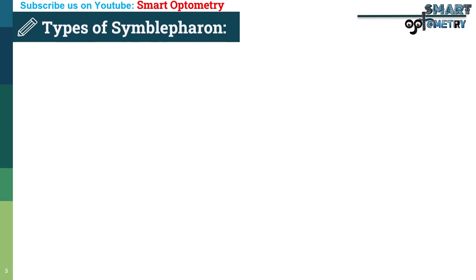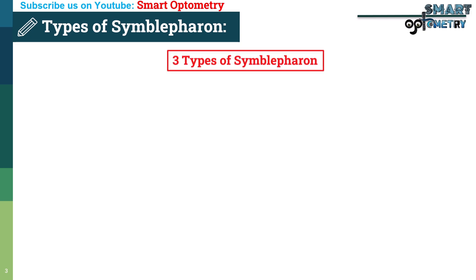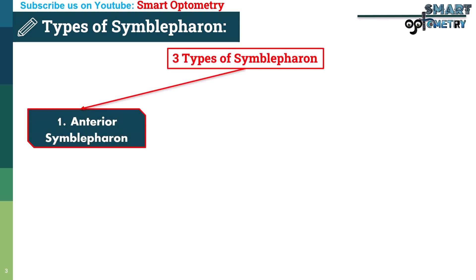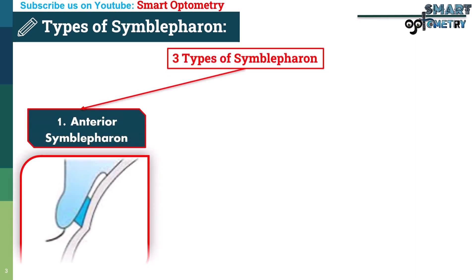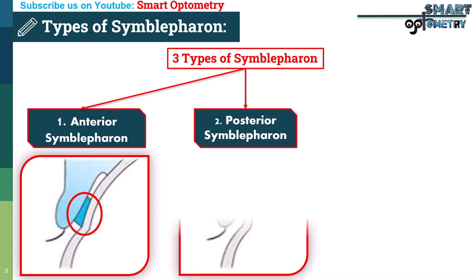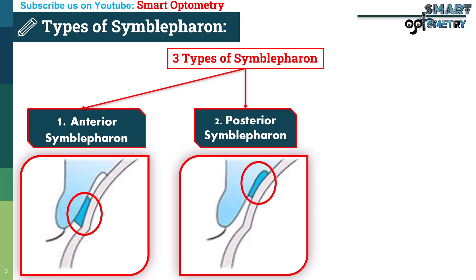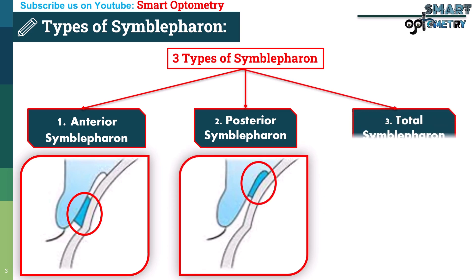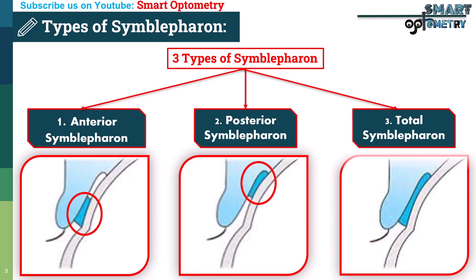What are the types of Symbolpheron? Depending on area of adhesion, Symbolpheron can be divided into three types. 1. Anterior Symbolpheron: when adhesions are limited to the anterior part of the eye. 2. Posterior Symbolpheron: when adhesions extend to the phonics of the eye. 3. Total Symbolpheron: when adhesions involve the entire eyelid.